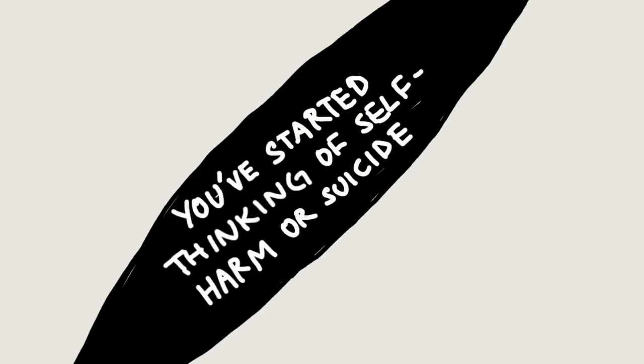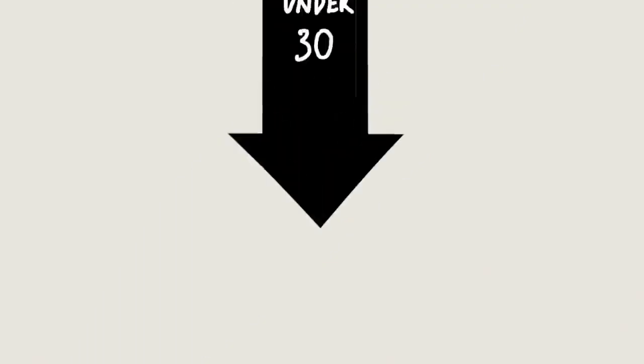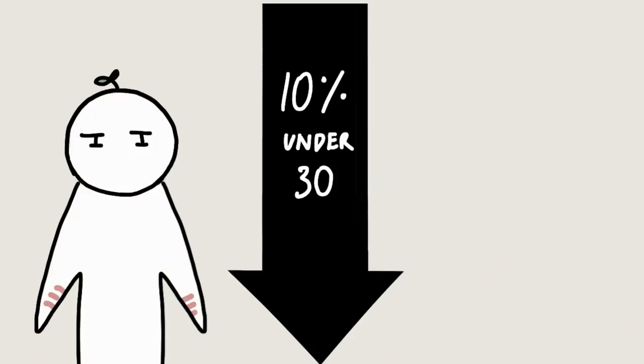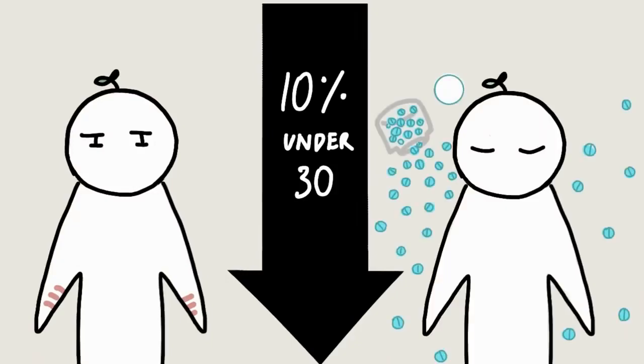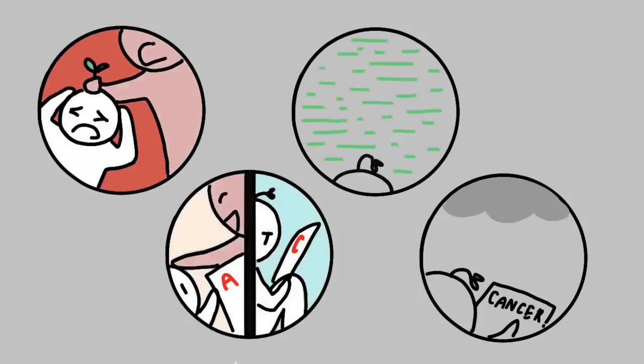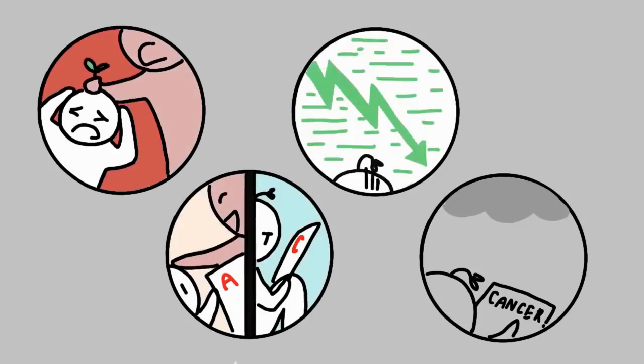Number 10: You've started thinking of self-harm or suicide. The Mental Health Foundation reported up to 10% of people under the age of 30 have thought about self-harm or suicide. There are many reasons people consider self-harm or suicide, such as abuse or neglect at home, a major loss, trauma, or a catastrophe that you can't control or avoid.